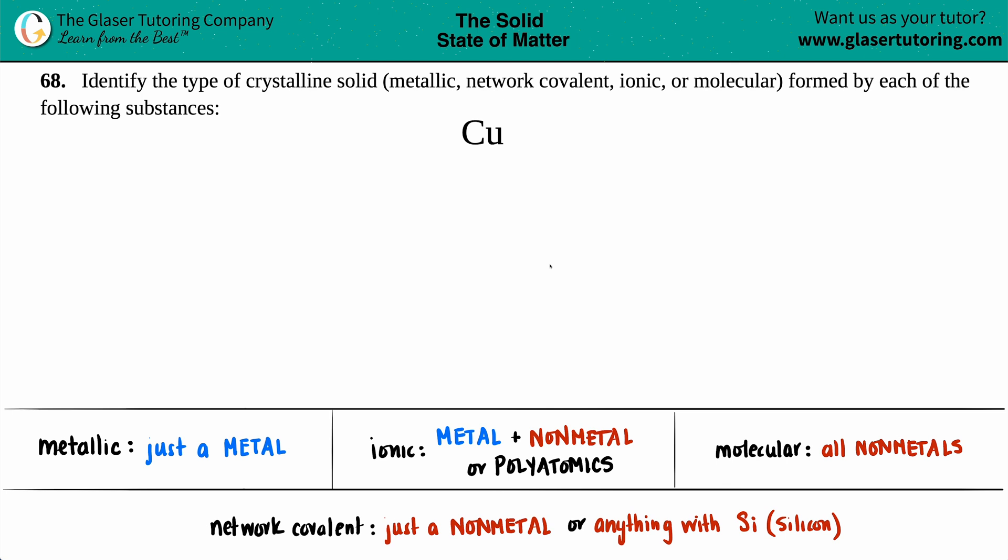Number 68: identify the type of crystalline solid, whether it's metallic, network covalent, ionic, or molecular, formed by each of the following substances. We just have copper, which is Cu. Now I did write a little bit of a cheat sheet down here for you guys to memorize for your test or quiz on the four different types of crystalline solids.